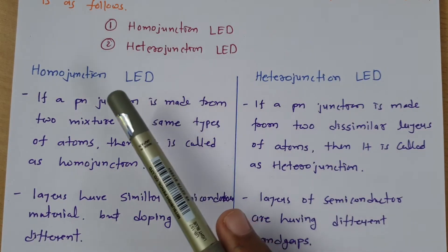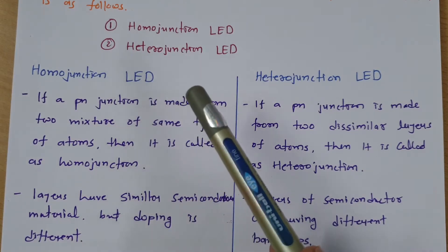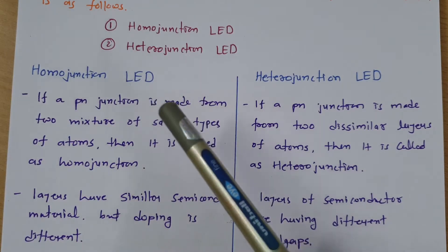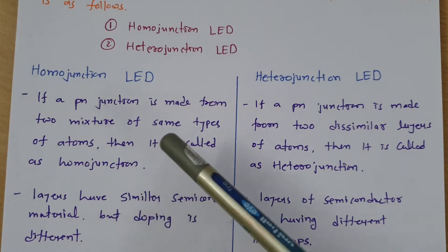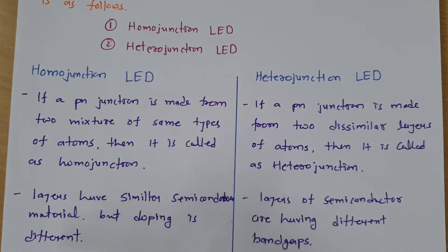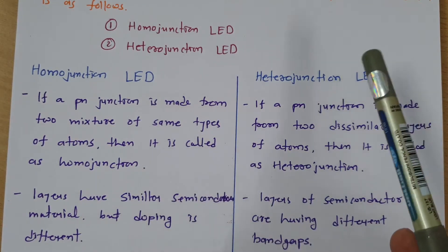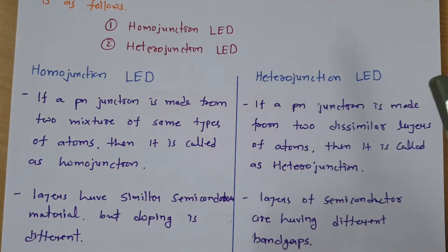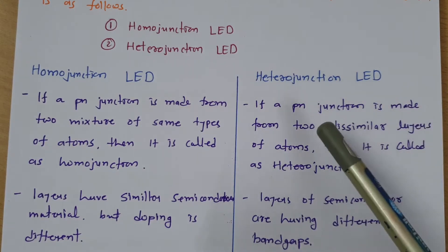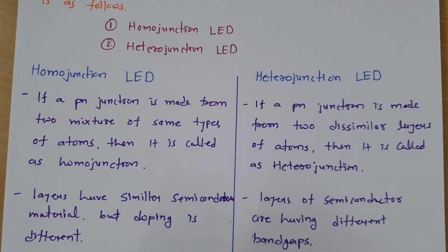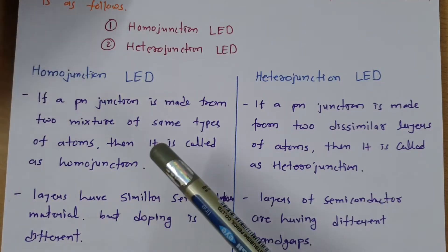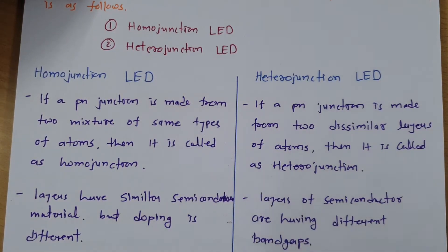In homo junction LED, you will have the same semiconductor material — the only difference is the doping will be different. In hetero junction LED, there will be two different layers with different band gaps. This is the basic distinction between homo junction and hetero junction.